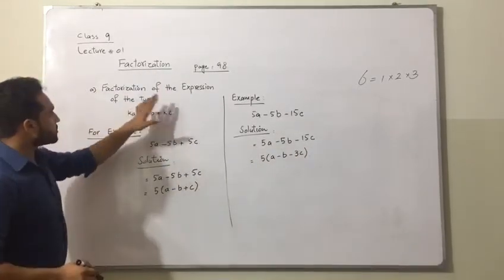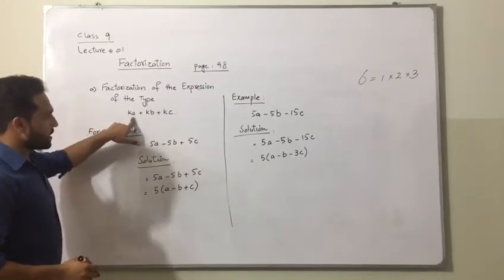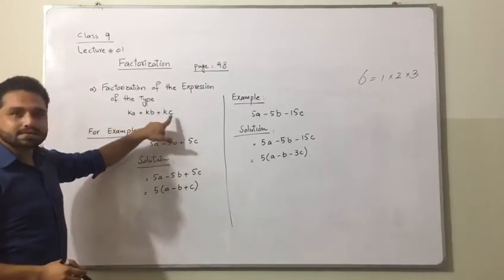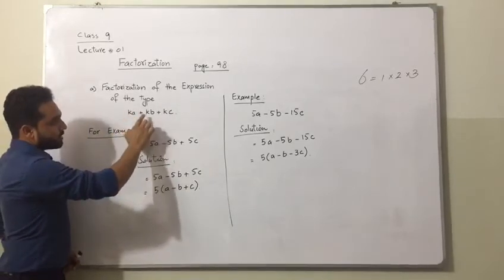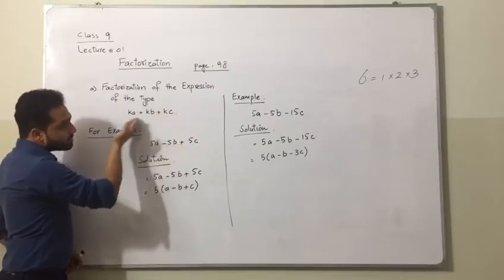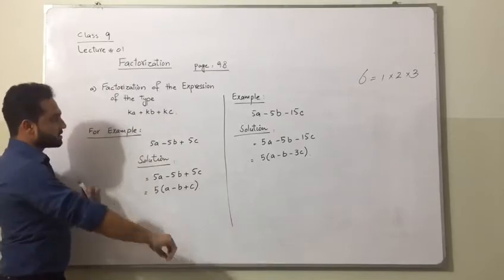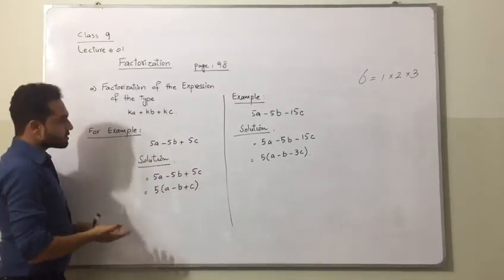That is about factorization of the expression of the type Ka plus Kb plus Kc. Means we have a constant K, K, K with 3 different variables. So how we can factorize this?